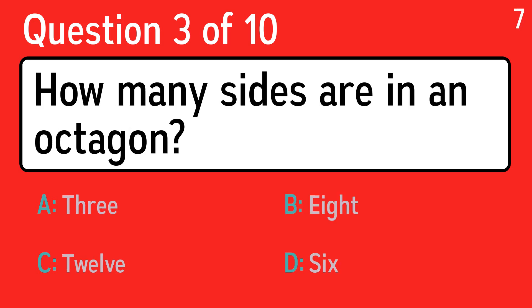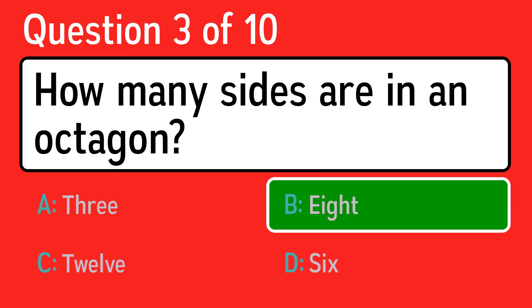Question 3, how many sides are in an octagon? The correct answer is B, 8.